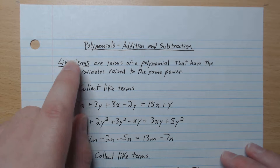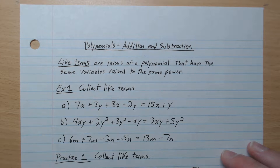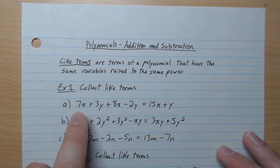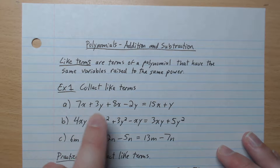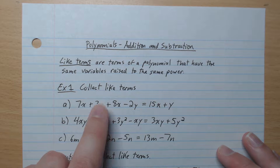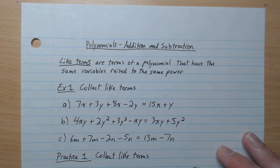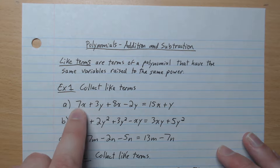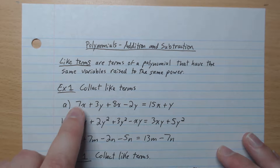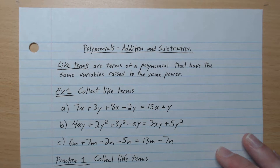Like terms are terms of a polynomial that have the same variables raised to the same power. For example, collecting like terms: 7x plus 8x gives 15x; 3y minus 2y equals 1y. I like to think of it as apples and oranges — you don't mix them together, but 7 apples plus 8 apples equals 15 apples. That you can say.